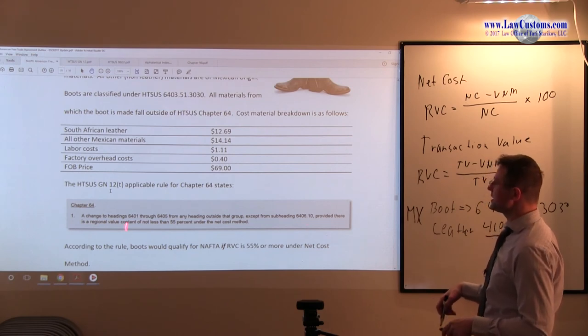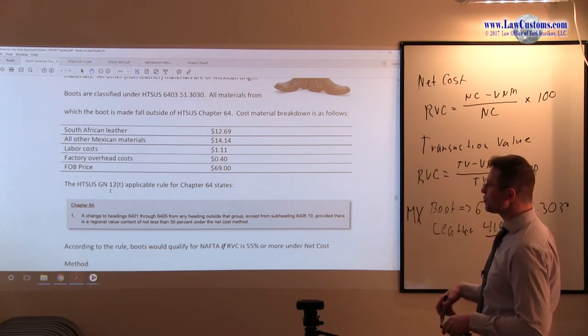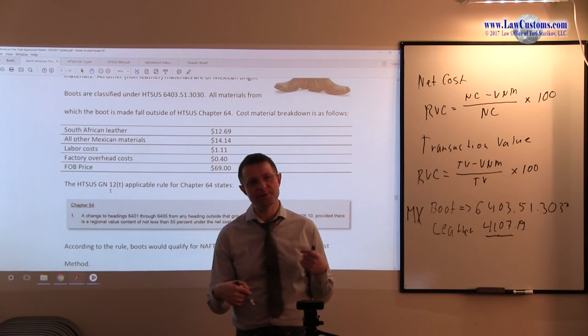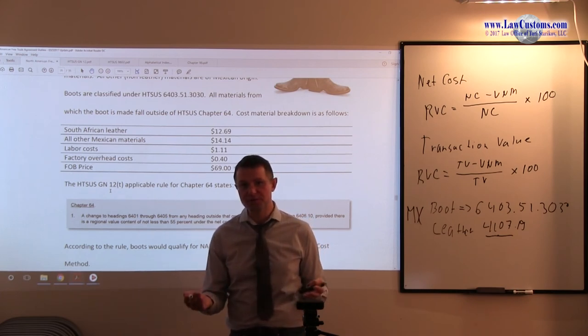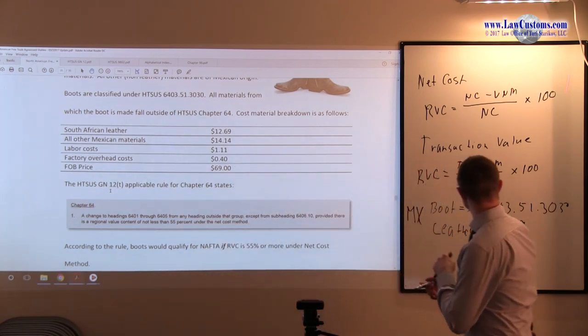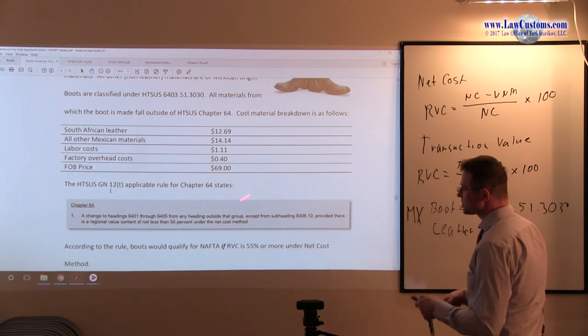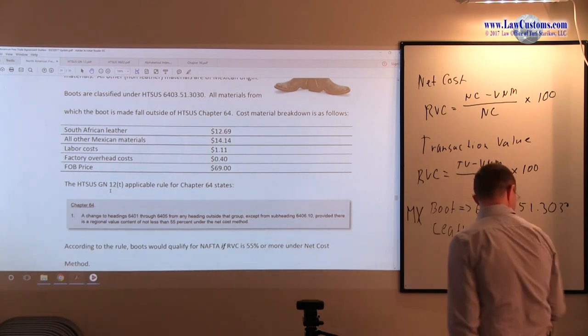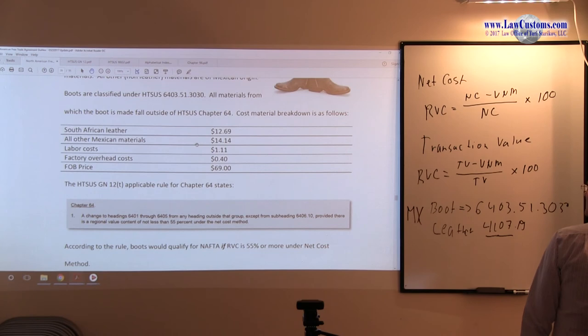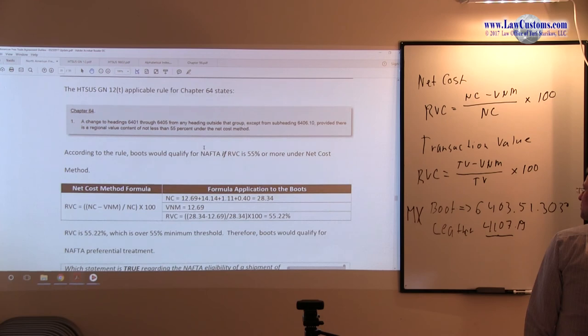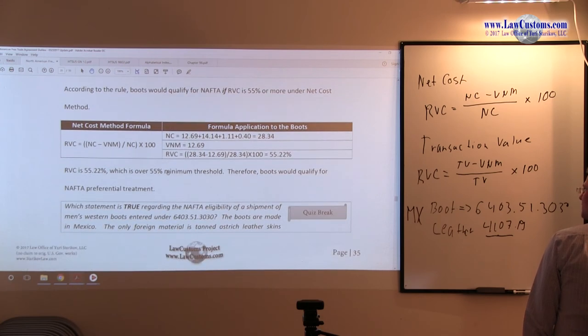The second step is 55% for the net cost. So we are not given a choice to go to the transaction value. We are given the only choice, which is the net cost value, and we must stick to this formula. What we do is we need to figure out, based on these numbers, is this 55% or not 55% or more, or 55% or less, or is it more? If it is 55% or less, then we are good. If it is more, then we are not so good.